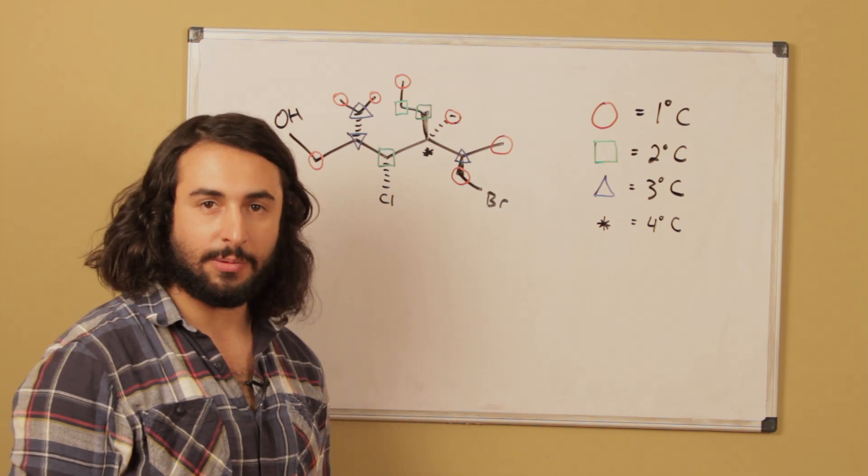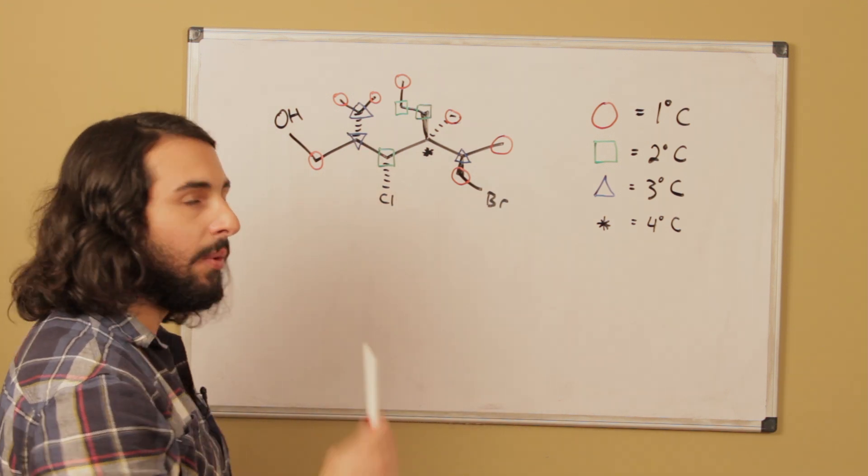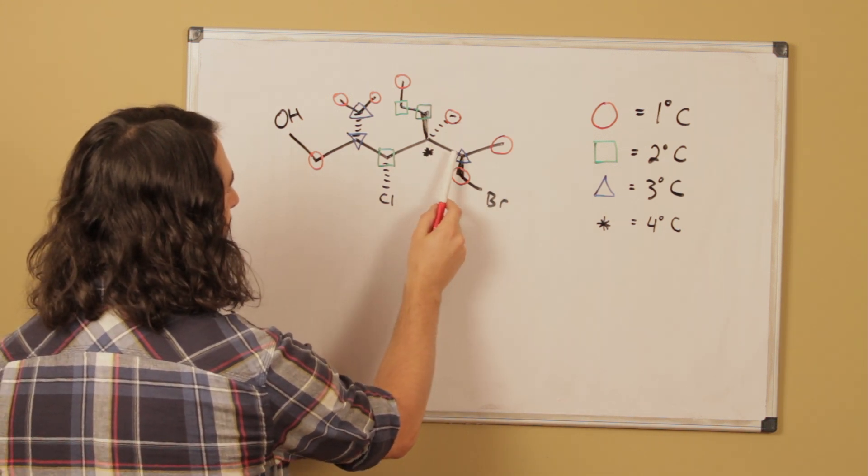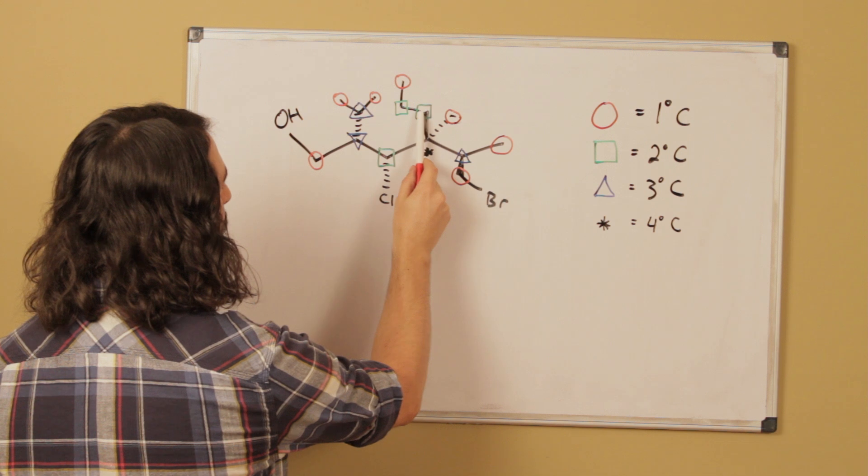And then as it happens there's only one quaternary carbon. A quaternary carbon is connected to four other carbons and that's one, two, three, four.